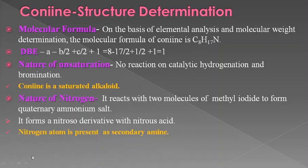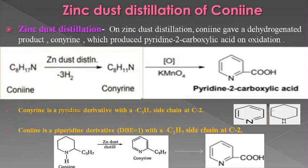Next we come to the functional nature of nitrogen. One nitrogen is present in conine. There are two important reactions: it reacts with two molecules of methyl iodide to form a quaternary ammonium salt, and it forms a nitroso derivative with nitrous acid. These reactions indicate nitrogen is present as a secondary amine — one molecule of methyl iodide converts the secondary amine to a tertiary amine, and the next converts it to a quaternary ammonium salt. The conclusion is that a secondary amino group is present in conine.